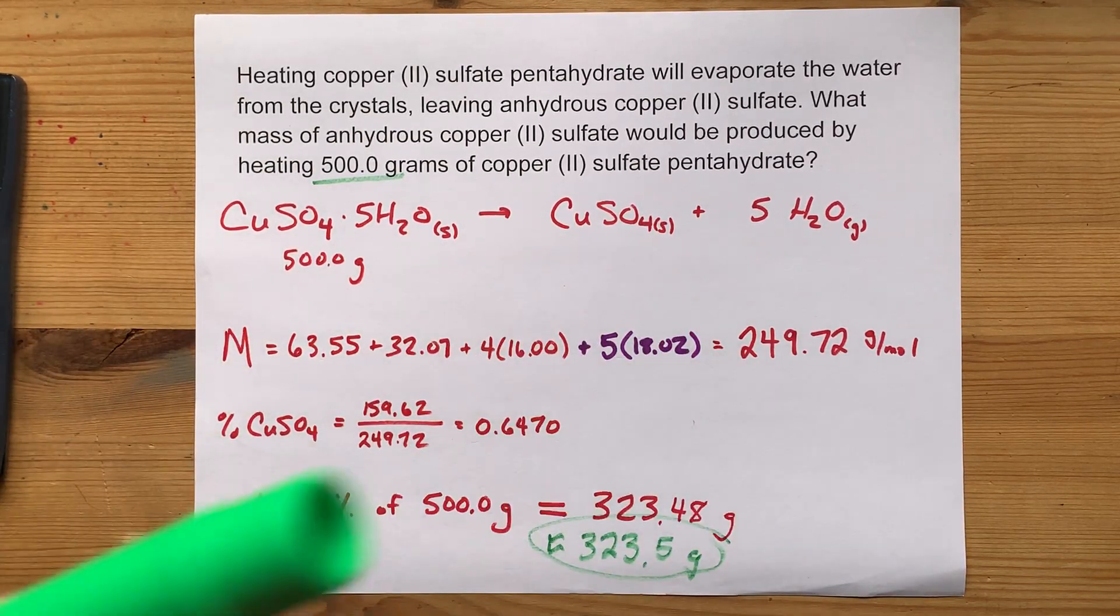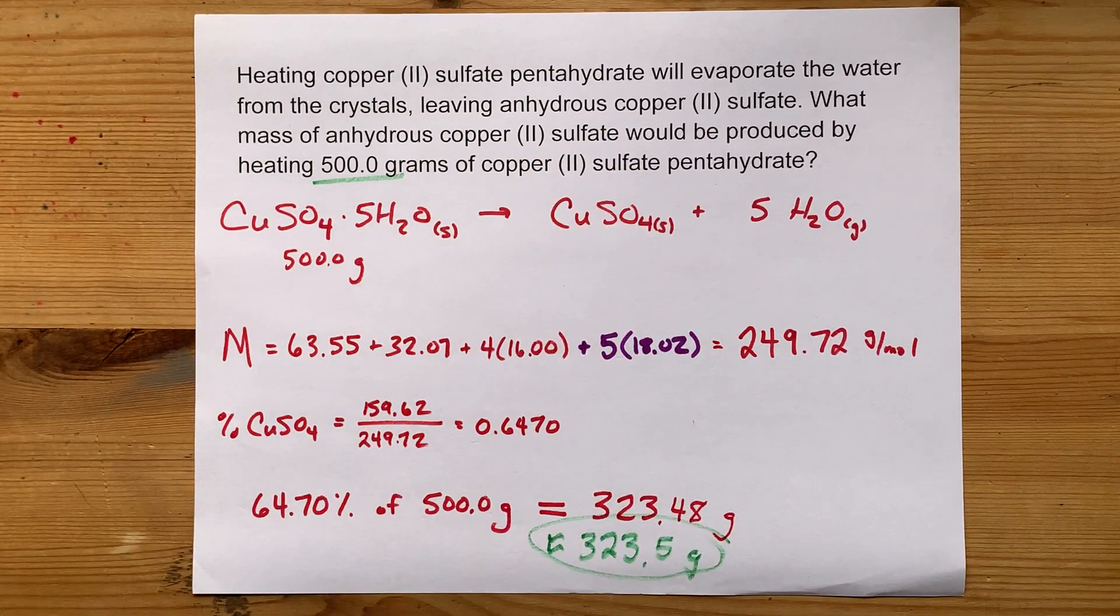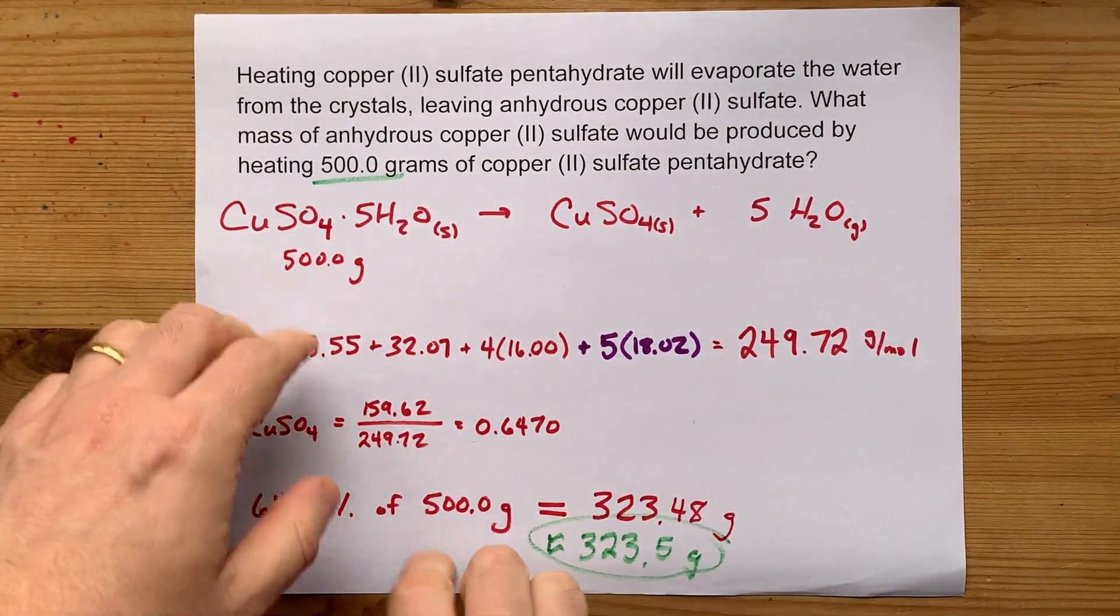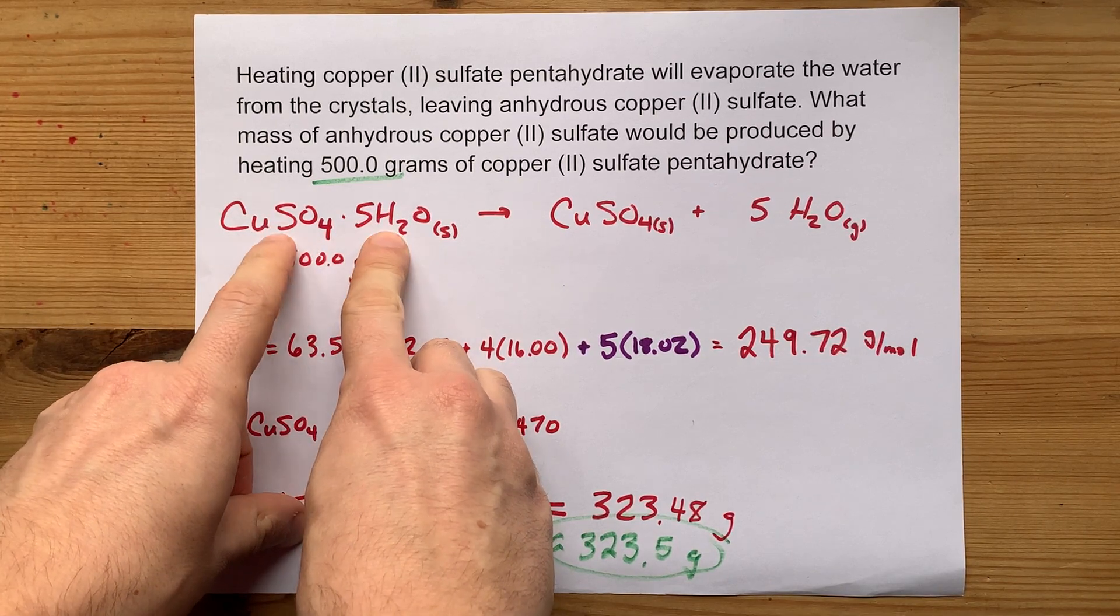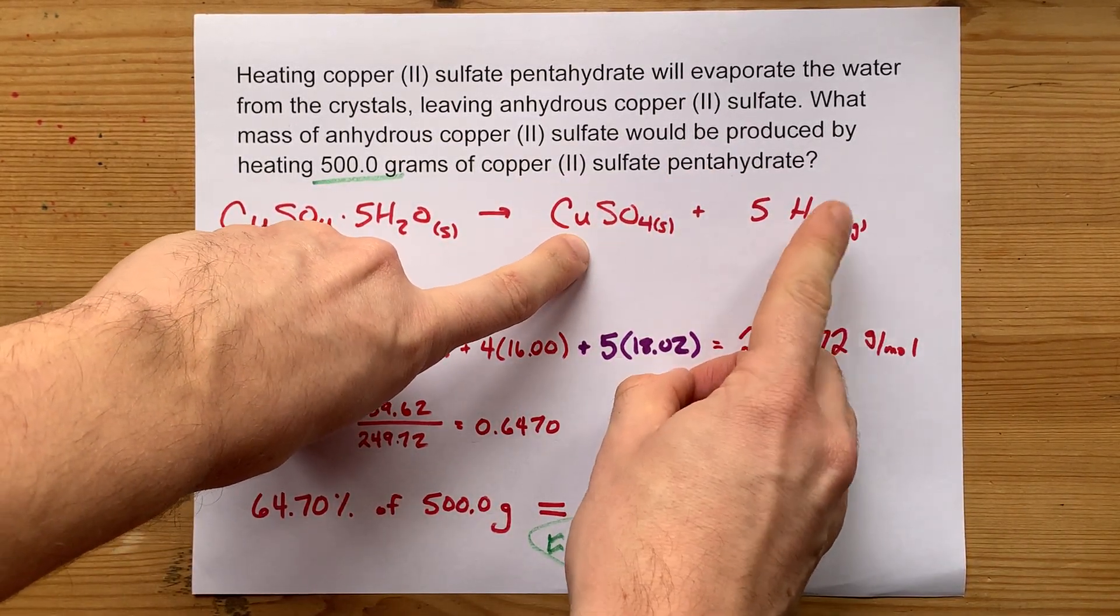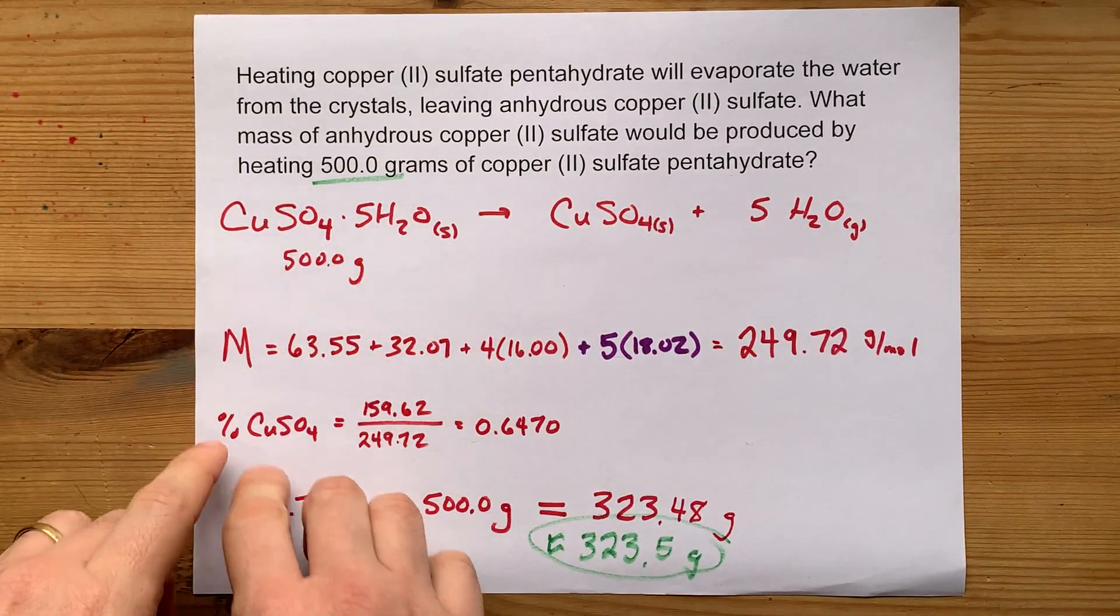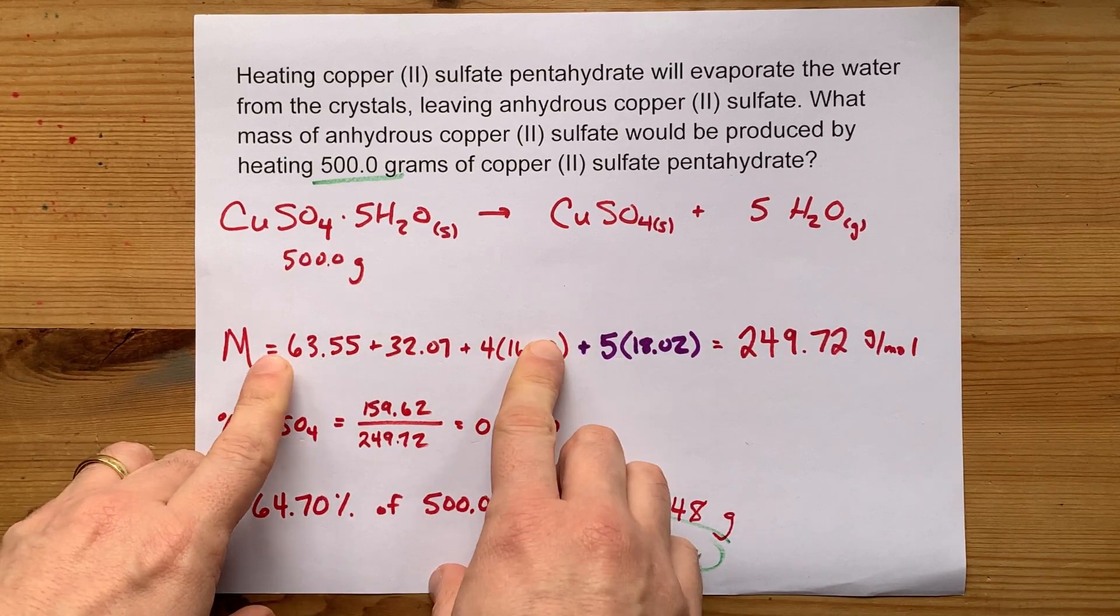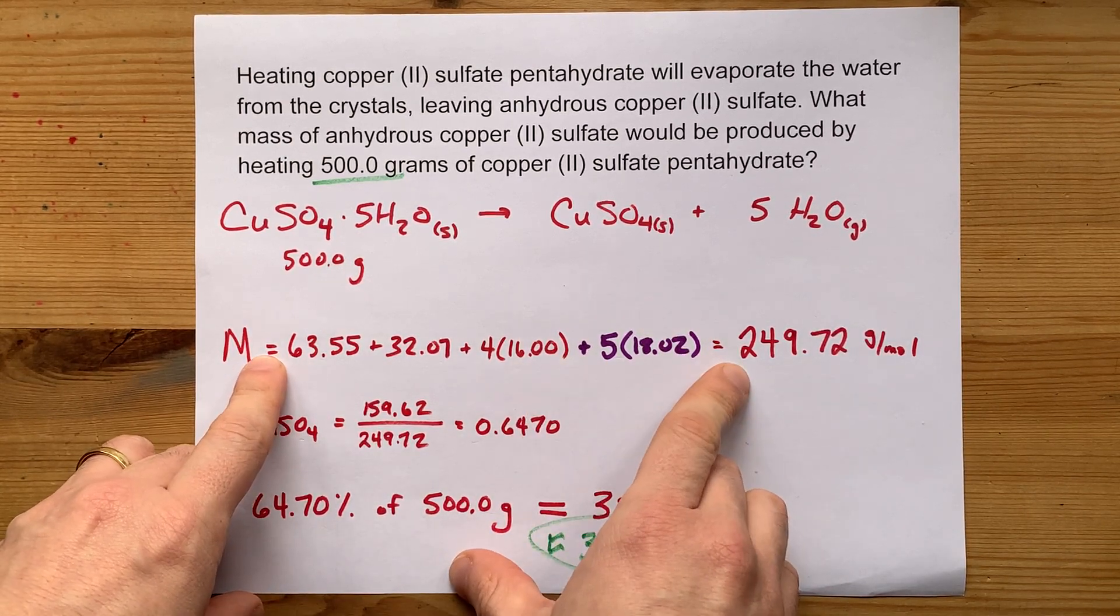Feel free to watch another video. It doesn't have to be by me if you don't know what significant figures are. There you go. The idea is that the copper sulfate pentahydrate is breaking up to give you dry stuff and water. The percent that was the dry stuff is the contribution of the dry stuff out of the total.